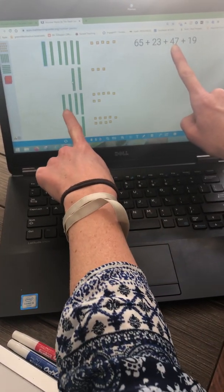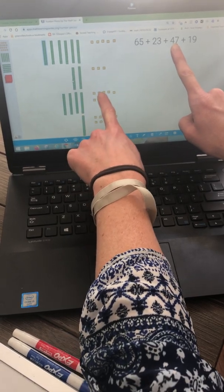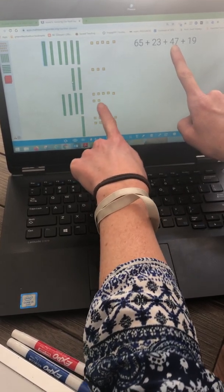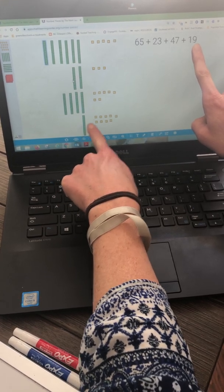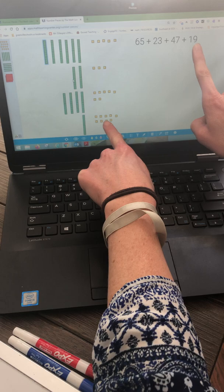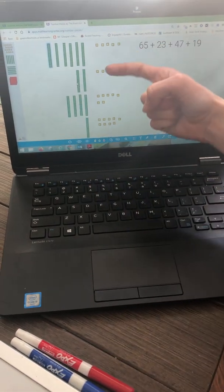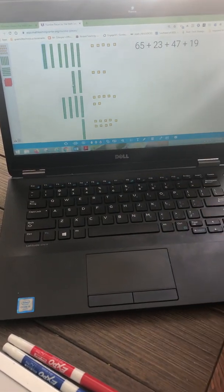47 was represented as 10, 20, 30, 40, 41, 42, 43, 44, 45, 46, 47. And 19 was represented as 10, 11, 12, 13, 14, 15, 16, 17, 18, 19. So, I've started by showing each of my addends.